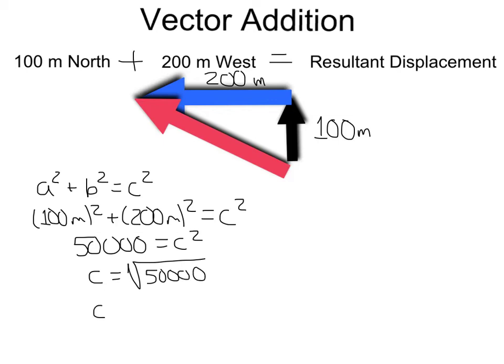will equal c squared. To find c, that's going to be the square root of 50,000. If you do that on your calculator, you'll find that it is 223.61 meters. So there's our magnitude, there's our how much part. So we can write that on our diagram,